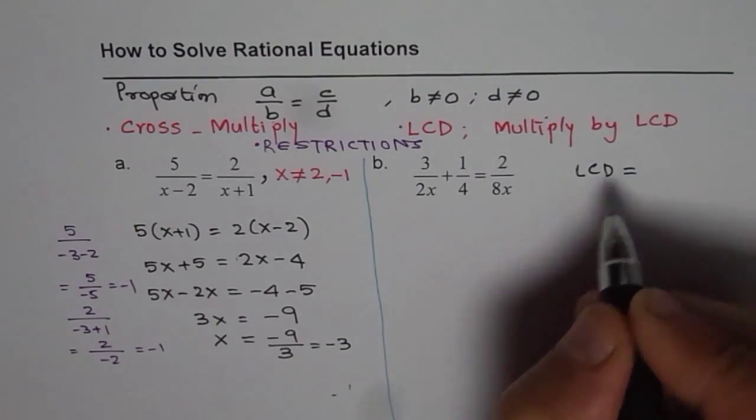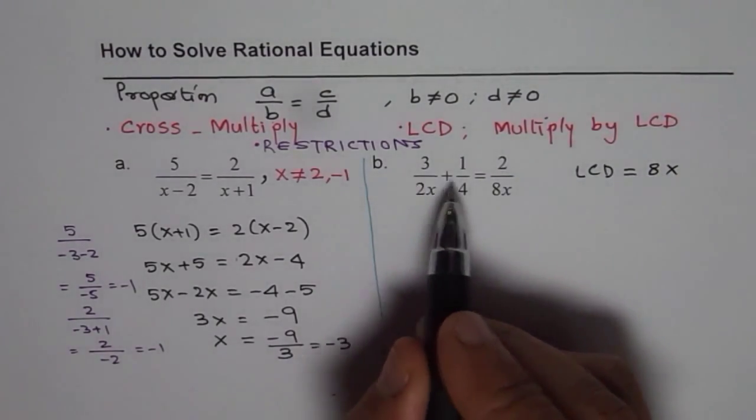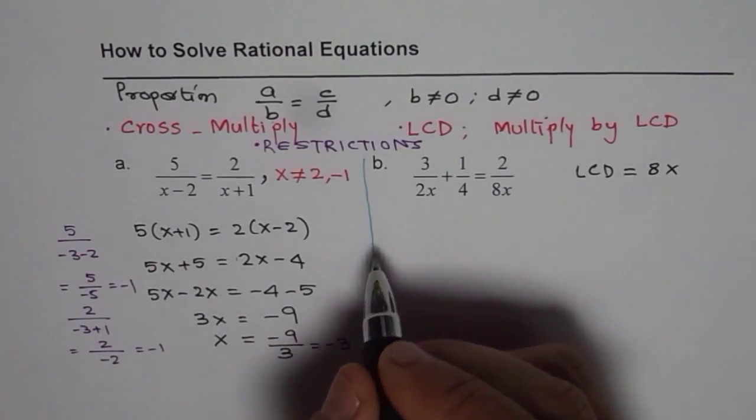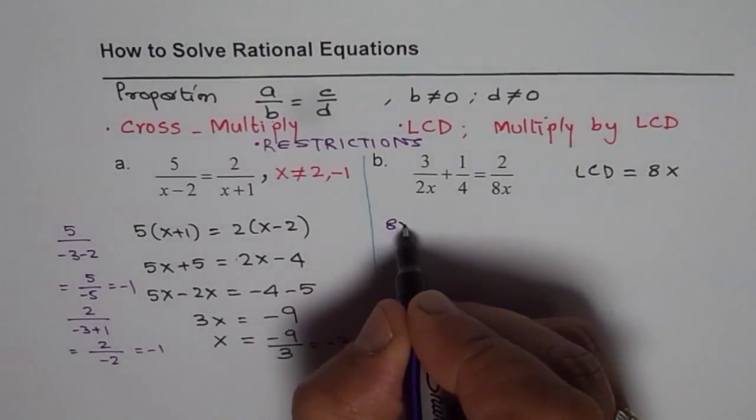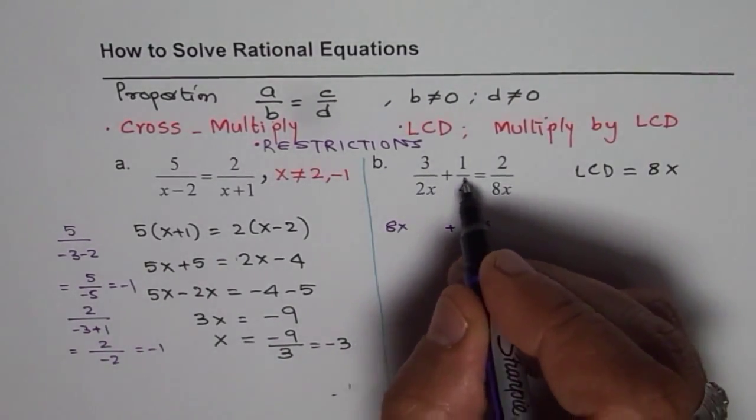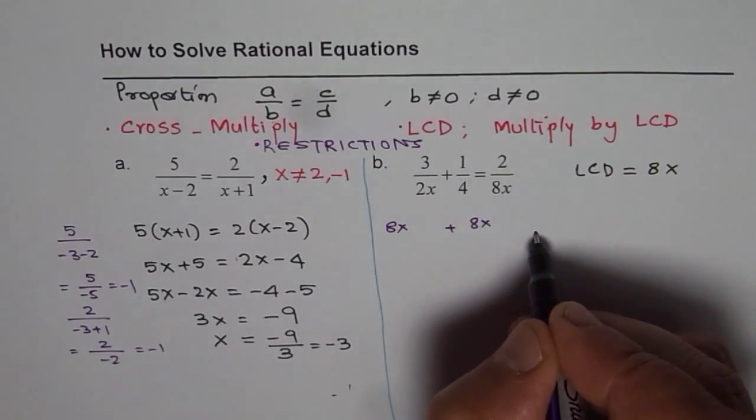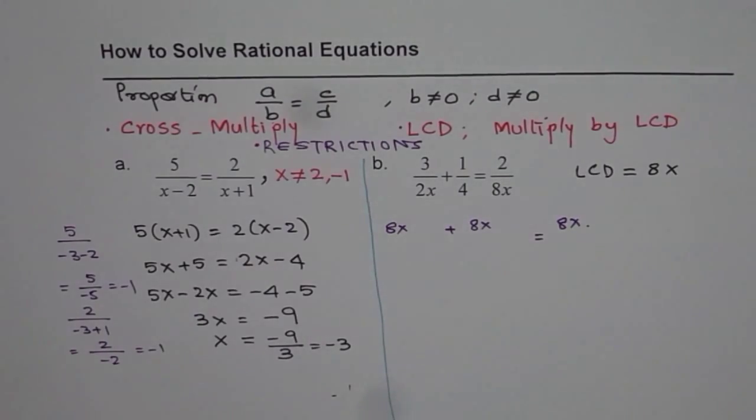So the lowest common denominator for us in this case is 8x. So we will multiply each term by 8x. So what I am trying to say here is kind of like this.